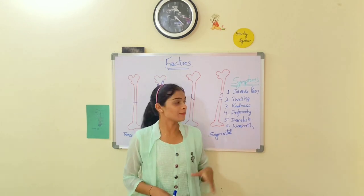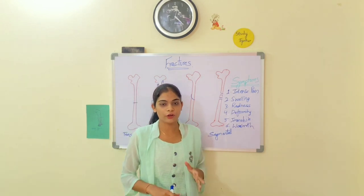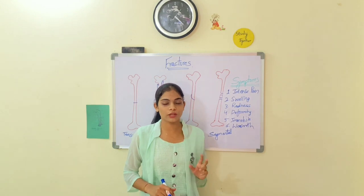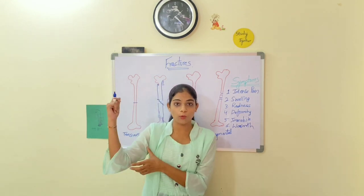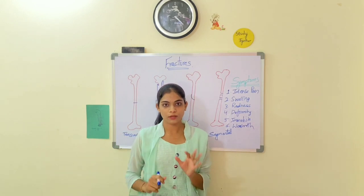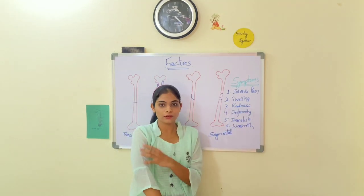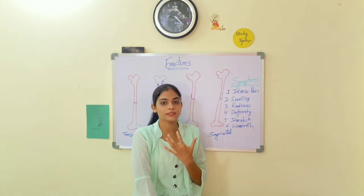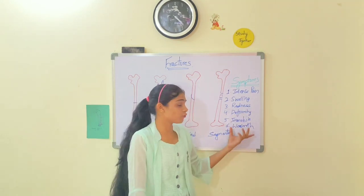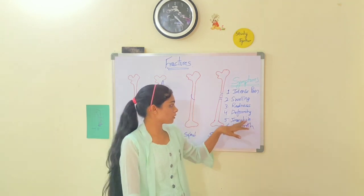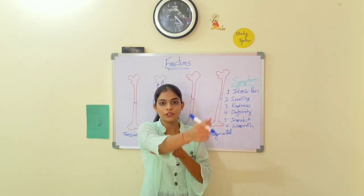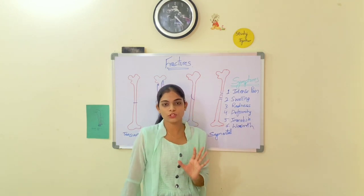Coming to the symptoms of fractures — what kind of feeling you have when you have a fracture — you have intense, very severe pain at the injury area. For example, if I have a fracture at my humerus, my arm bone, I can't bear the pain. You also feel swelling and inflammation because blood supply is rich in that area. You have redness and warmth due to blood supply, and you can't move your arm.